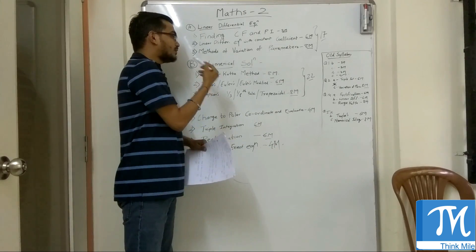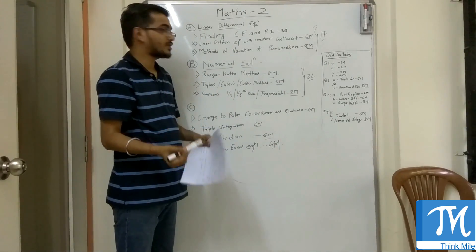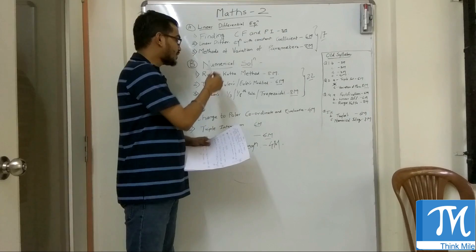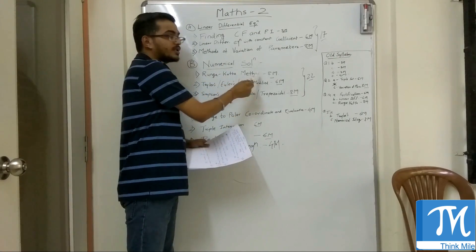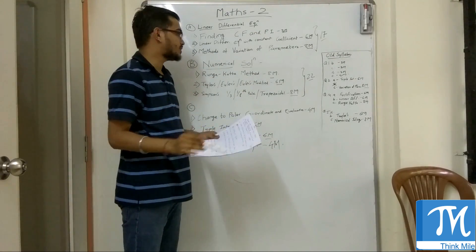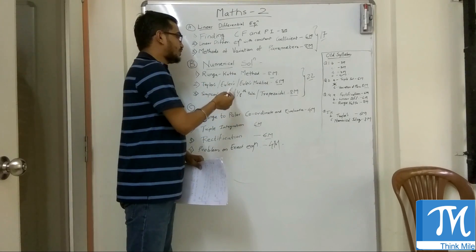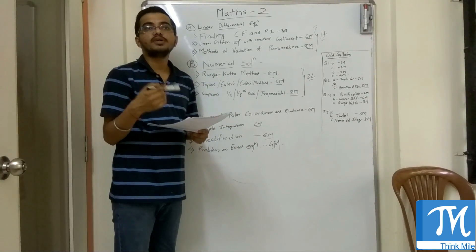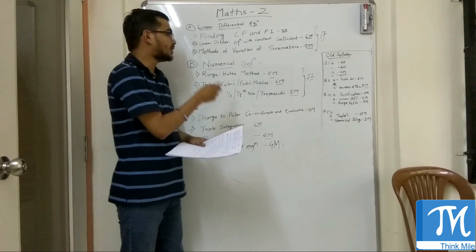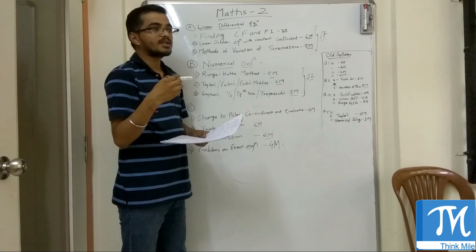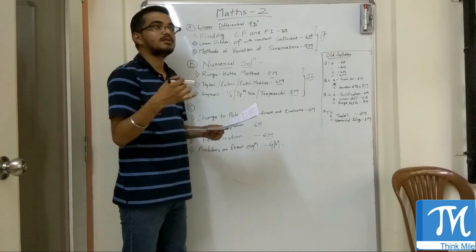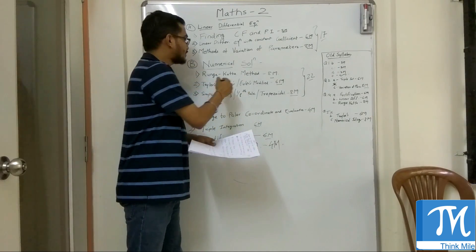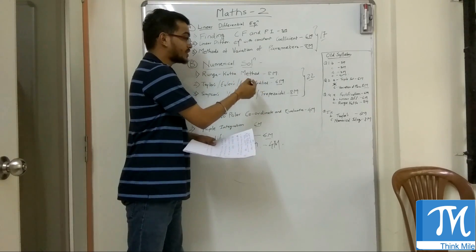Next, one of the most important chapters to clear is numerical methods and calculus of variation. In numerical methods, one portion on Runge-Kutta method of 8 marks will always be asked. You can check for sums in the textbook. There are around 10 to 15 sums on Runge-Kutta method. Do all of them. There are different types of sums asked. Find the approximate rather than exact value also. Verify it. Check out all the methods, all the questions.